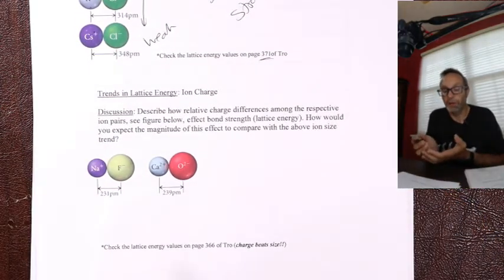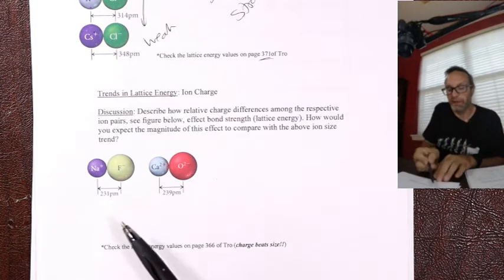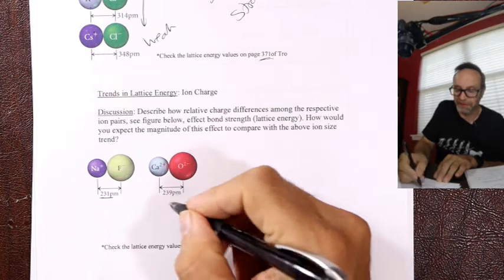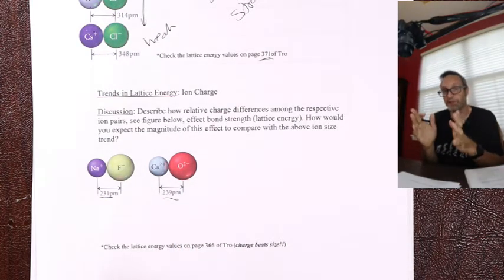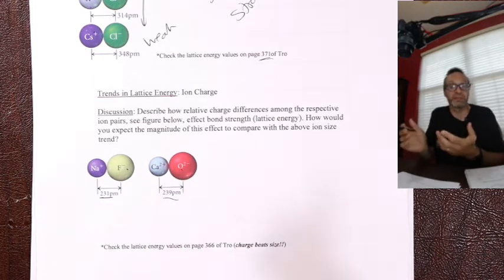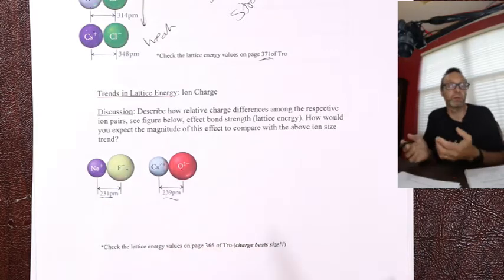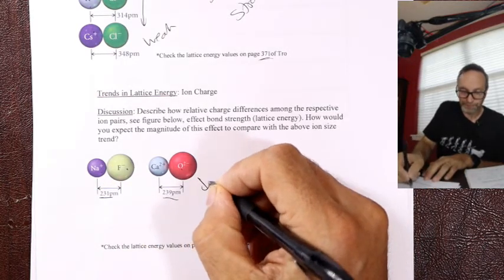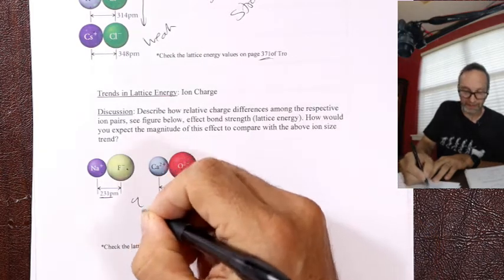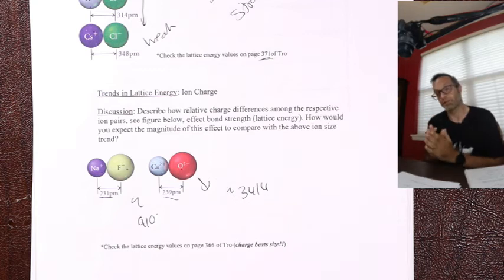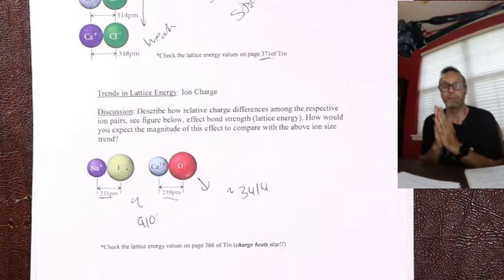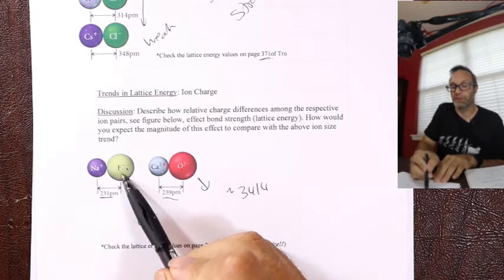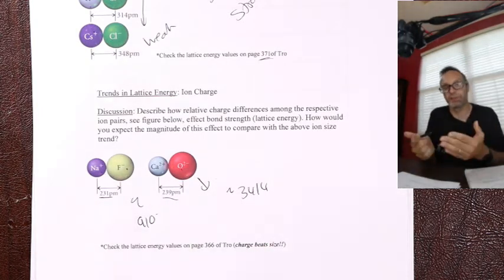What about the analogy of double bond versus single bond? If I have NaF (plus one minus one) versus CaO (plus two minus two), chosen to be approximately the same bond distance - plus two minus two is going to have a stronger interaction than plus one minus one. It's the equivalent of a single bond versus a double bond. The bond strength for CaO is approximately 3414 kJ/mol, and for NaF approximately 910 kJ/mol - significantly stronger. Longer is weaker, and plus one minus one is weaker than plus two minus two.